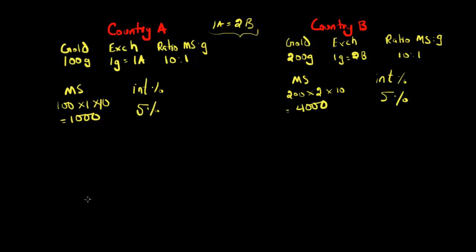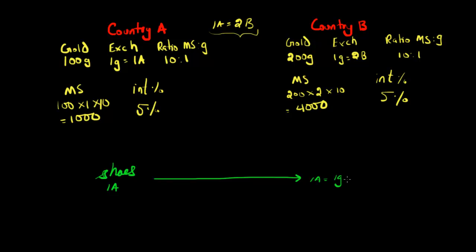Let's imagine that we're a shoe manufacturer who typically sells shoes in country A for one country A dollar. Now imagine we want to export some of these shoes to country B. We take the shoes and send them over on a boat to country B, where we're able to sell them for the equivalent price — one country A dollar, which equals one gram of gold, which equals two country B dollars. We sell the shoes for two country B dollars, change them to one gram of gold, and send that gold back to ourselves in country A.